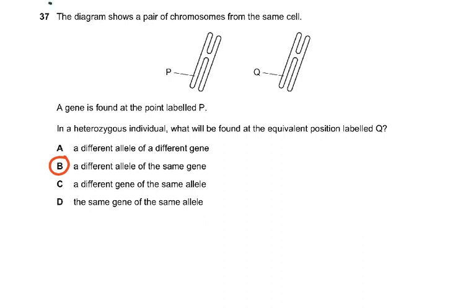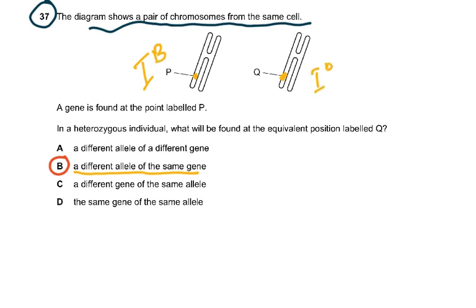Question 37: the diagram shows a pair of chromosomes from the same cell. A gene is found at the point labeled P. In a heterozygous situation, what is found at the equivalent position labeled Q? A different allele of the same gene. For instance, if you have IB here, you could have IO here. In heterozygous individuals it could be IB IO, IA IB, or IA IO. The gene has to be the same but the allele — the alternative form of the gene — could be different.